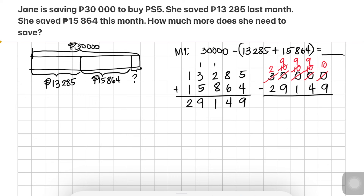10 ones minus 9 ones is 1. 9 tens minus 4 tens is 5. 9 hundreds minus 1 hundred is 8. 9 thousands minus 9 thousands is 0. 2 ten-thousands minus 2 ten-thousands is 0. Therefore, the answer is 851 pesos.